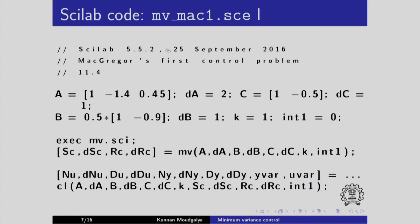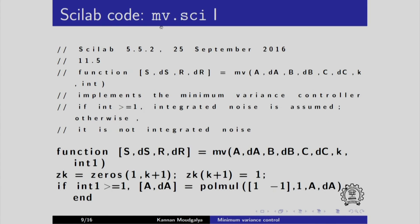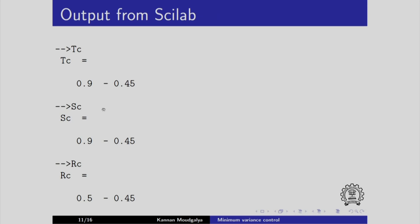We have the scilab code. This file is mv underscore mac1 dot se. In the text book, we refer to it as McGregor's first control problem that calls this function called mv dot se. Here is the function defined and the values are given here. The numerator we obtained as 0.9 minus 0.45 z inverse, denominator 0.5 minus 0.45 z inverse. Of course, there is a minus sign.